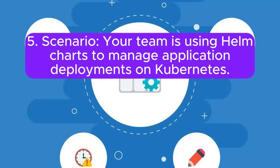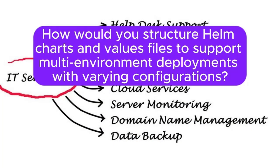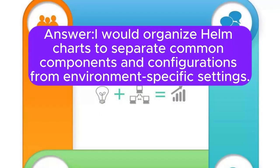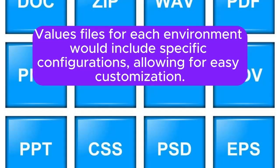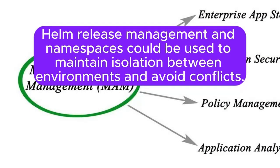Scenario 5: Your team is using Helm charts to manage application deployments on Kubernetes. How would you structure Helm charts and values files to support multi-environment deployments with varying configurations? Answer: I will organize Helm charts to separate common components and configurations from environment-specific settings. Values files for each environment would include specific configurations, allowing for easy customization. Helm release management and namespaces could be used to maintain isolation between environments and avoid conflicts.